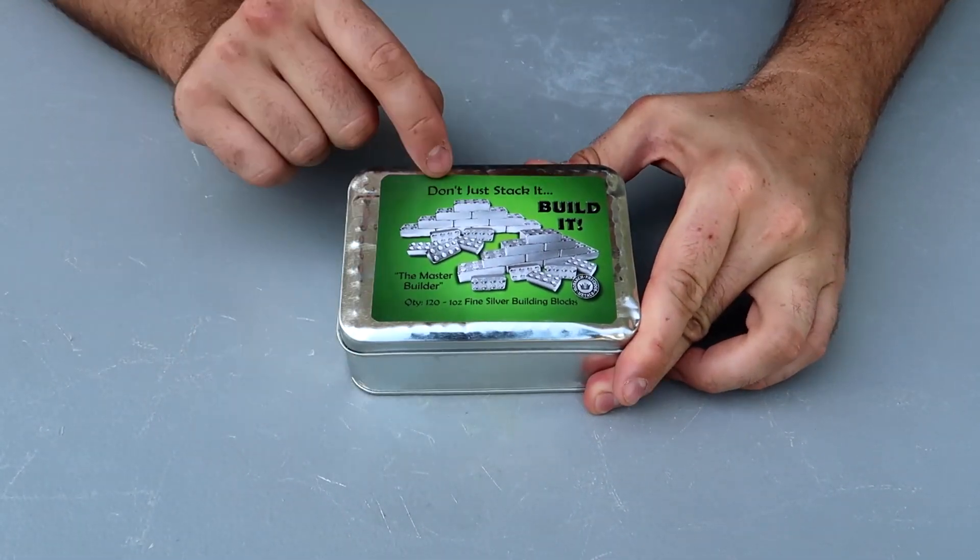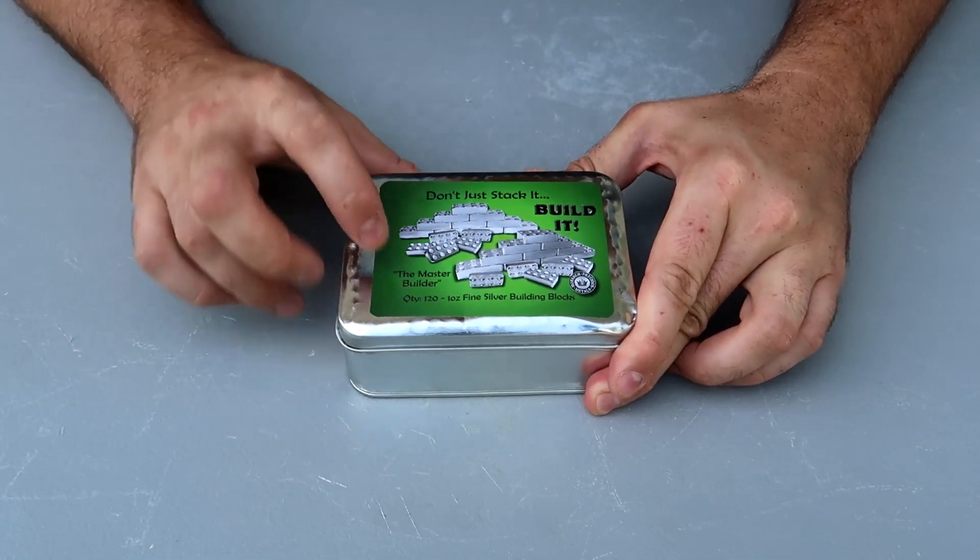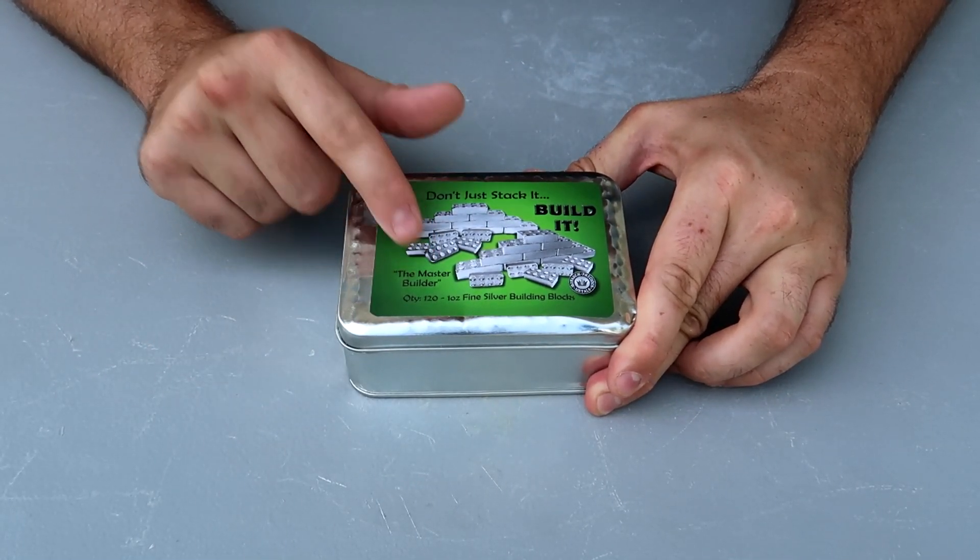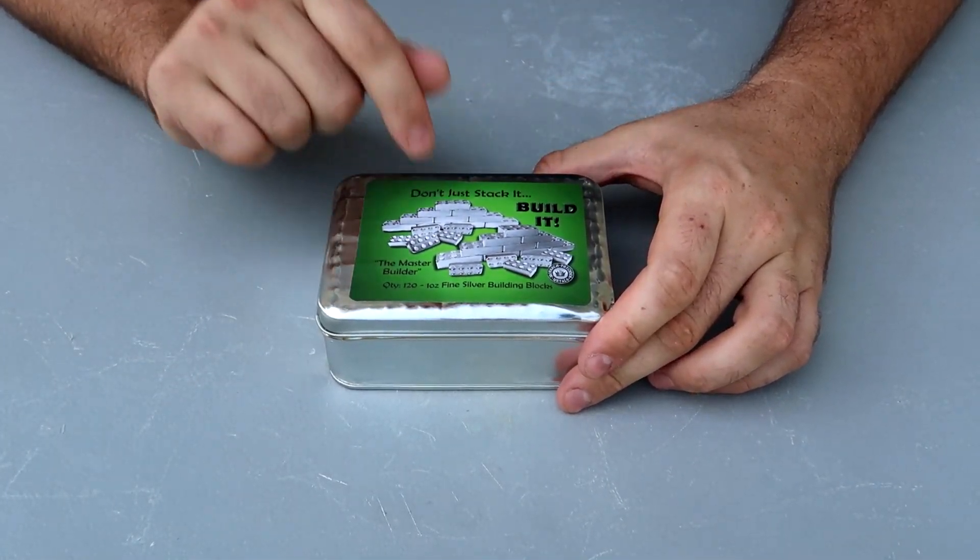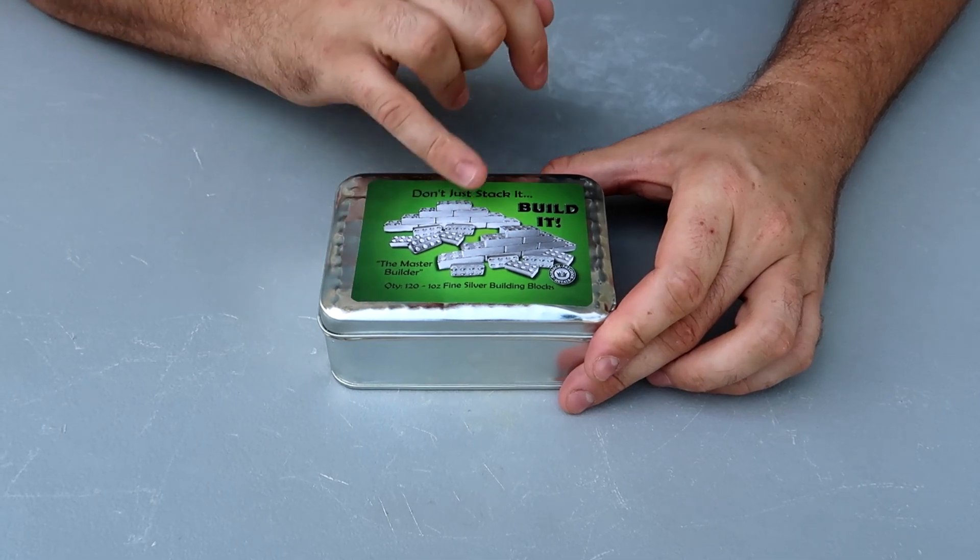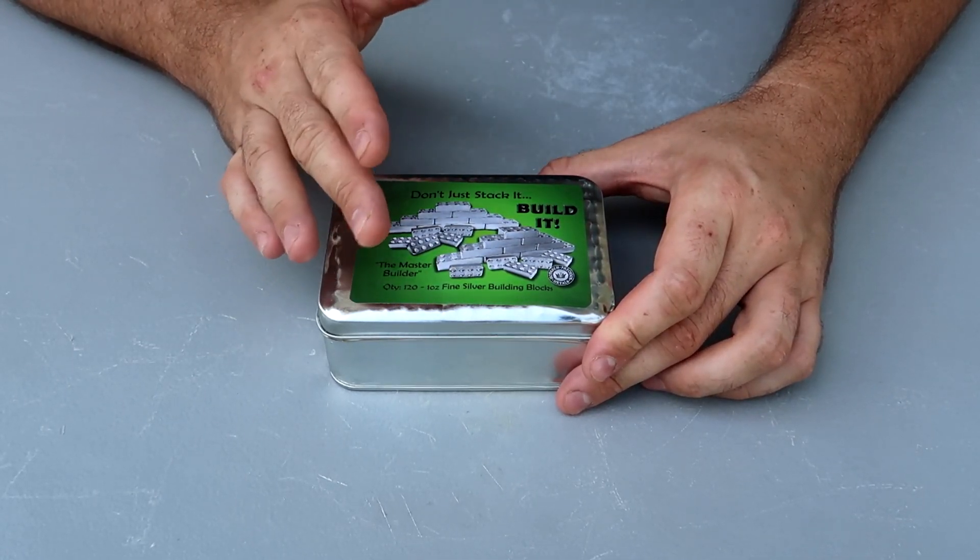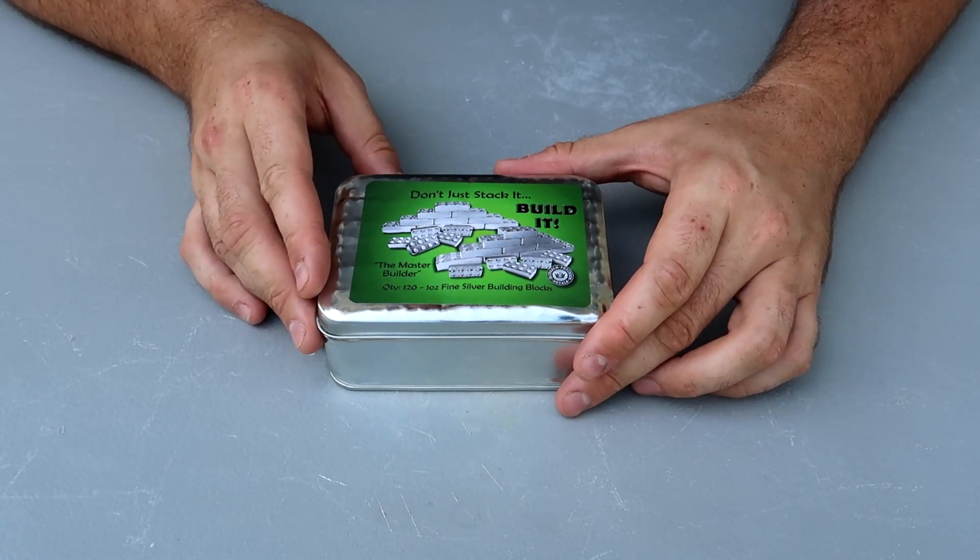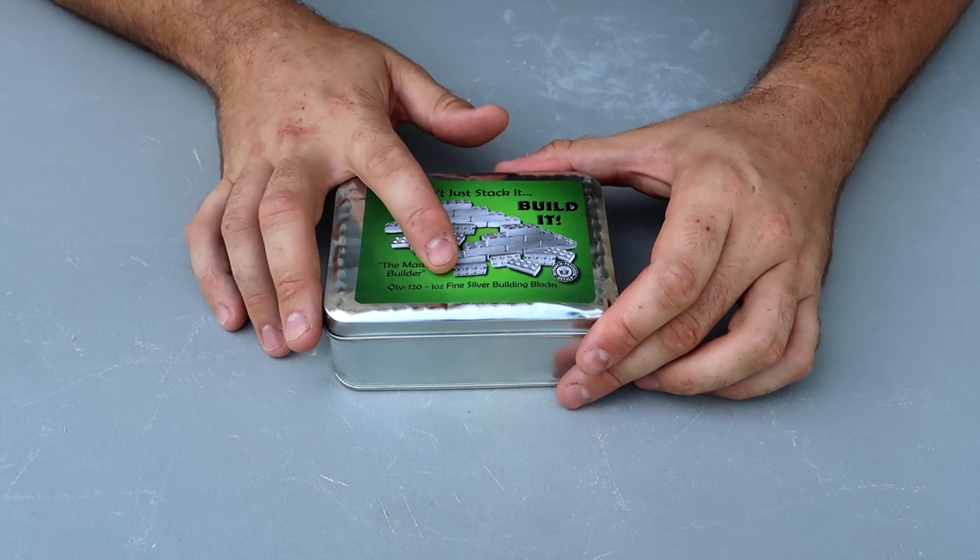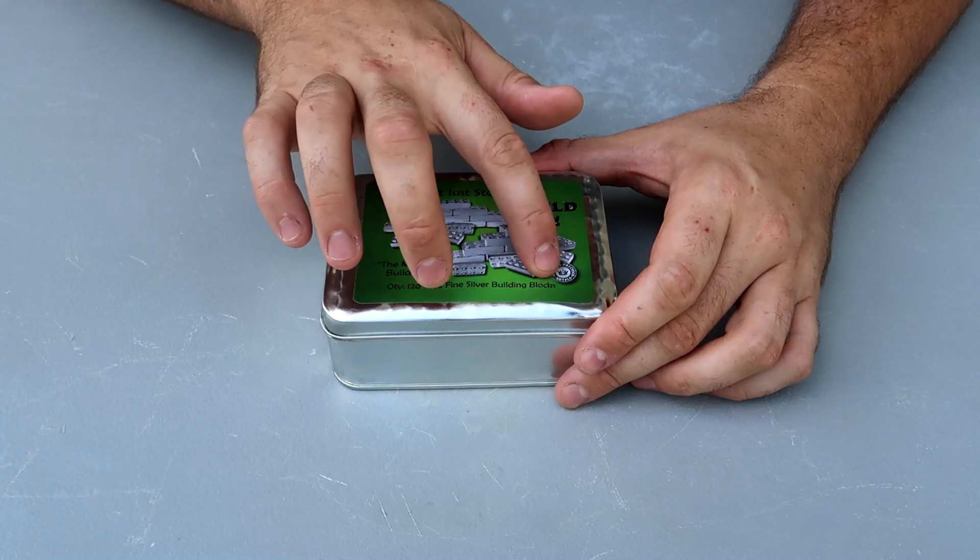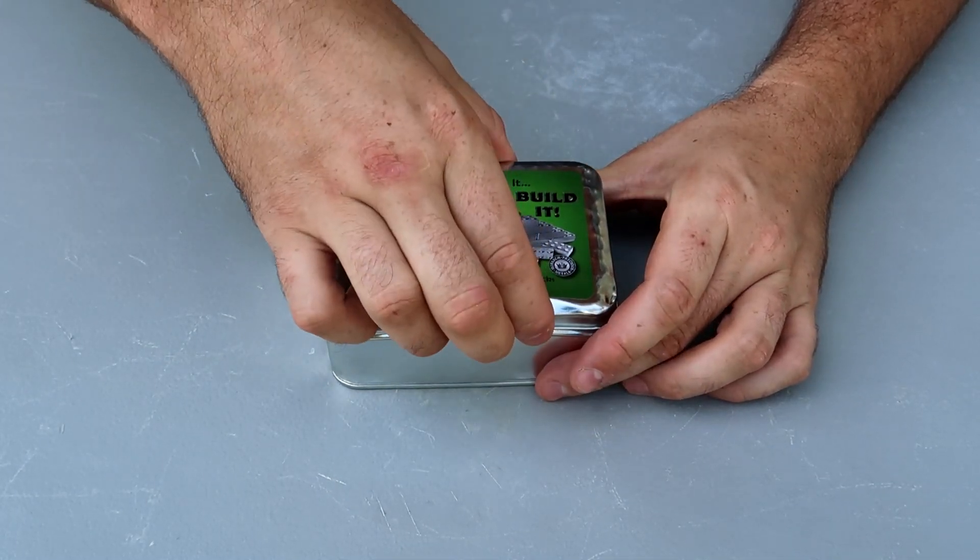But what does it say? Don't just stock it, build it. The Monster Builder - so this is a monster box for one of those builders. It's not Lego blocks, even though they call them Lego blocks, it's nothing to do with Legos. Maybe they look alike, but that's pretty much it. So this is quantity 120, one ounce fine silver building blocks.